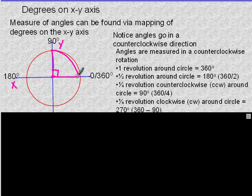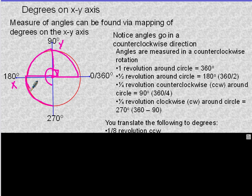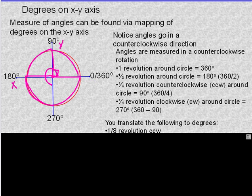If we continue going around to a straight angle, that's 180 degrees. Continuing, this angle is 270 degrees, and a full rotation back to the start is 360 degrees. Those are your basic general markings for angles in the coordinate plane — they go in the counter-clockwise direction. One complete rotation is 360 degrees.